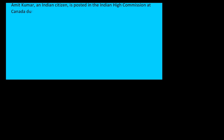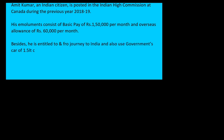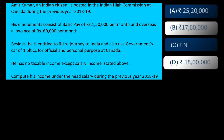Let's start with question number one. Amit Kumar, an Indian citizen, is posted in the Indian High Commission at Canada during previous year 2018-19. His emoluments consist of basic pay of Rs. 1,50,000 per month and overseas allowance of Rs. 60,000 per month. Besides, he is entitled to a to-and-fro journey to India and use of the government's car of 1.5 liter CC for official and personal purposes at Canada. He has no taxable income except salary. Compute his income under the head salary.